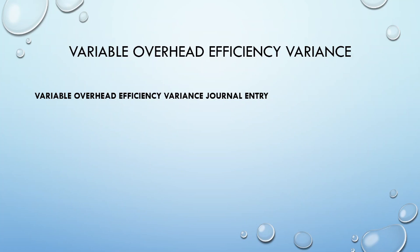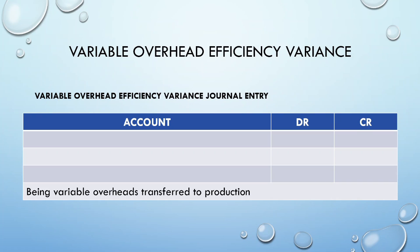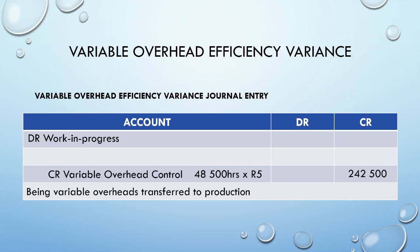Now let's think through the journal entry for the efficiency variance. We debit work in progress and credit the variable overhead control account. The variable overhead control account releases 48,500 hours at R5 per direct labor hour, equaling 242,500 Rand. Work in progress is recorded at standard — 45,000 hours at R5 per labor hour — giving 225,000 Rand. The difference is our efficiency variance, because the rate has stayed constant but the efficiency has varied.